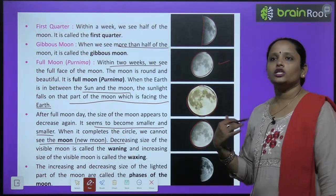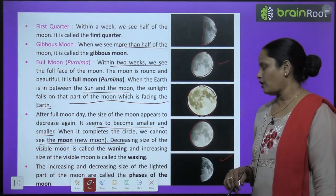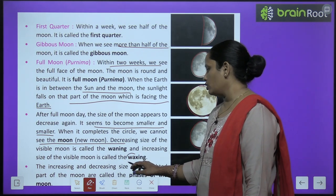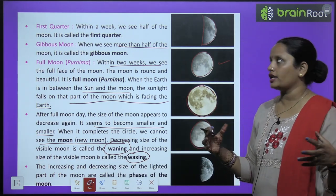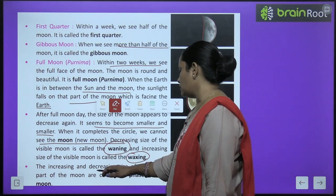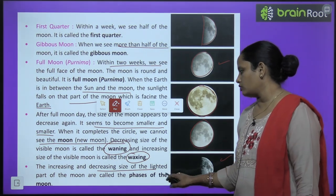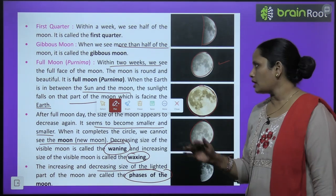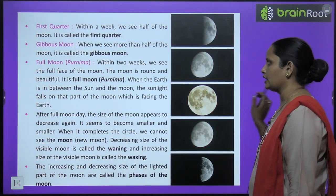The decreasing size of the visible moon is called waning, and the increasing size of the visible moon is called waxing. The increasing and decreasing size of the lighted part of the moon are called the phases of the moon.